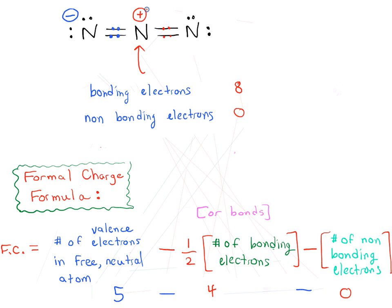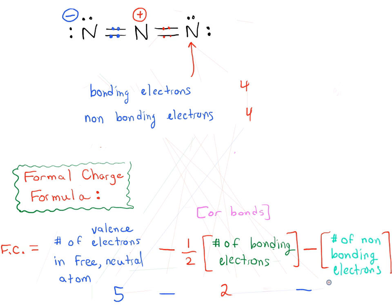Finally, we get to the nitrogen on the right end, which looks exactly like the nitrogen on the left. We have four bonding electrons and four non-bonding electrons, giving us five minus one-half times four, so five minus two minus four — five minus six — which is again minus one. So a charge of minus one, usually shown as just a minus.